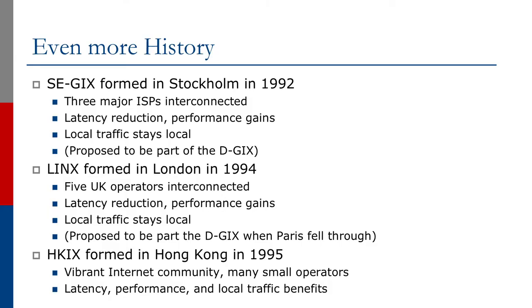In Asia, HKIX was formed in Hong Kong in 1995. Again, a vibrant Internet community with several small operators looking for latency, performance, and local traffic benefits, rather than having to haul traffic all the way across the Pacific Ocean to interconnect in the United States. This model continued with several other European exchange points being formed in 1996, 1997, and so on. Today we know about AMS-IX and DE-CIX, very well known exchange points in Europe, joined by many other smaller ones in several European countries. The exchange point was here to stay.